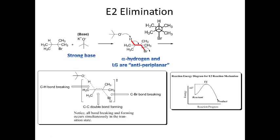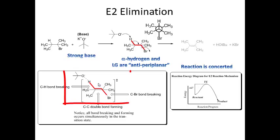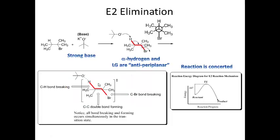The E2 is similar to the SN2 in that it is concerted — all of this is happening at the same time. The alpha hydrogen and bromine are anti-periplanar, on opposite sides of the same plane. Looking at the energy diagram, we start with reactants and end at products in one step, with the transition state depicted. E2 is concerted like SN2, but it is an elimination rather than a substitution.